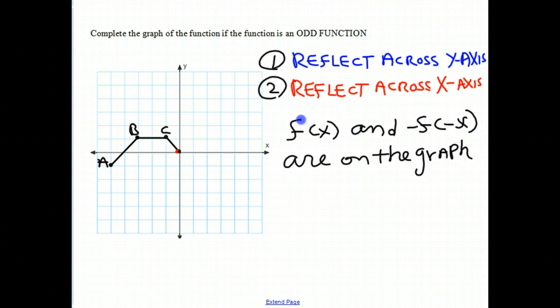So once again, for us to have an odd function, for every point on the graph, there must be a corresponding point that has been reflected across the y-axis and the x-axis. So let's do this one point at a time.